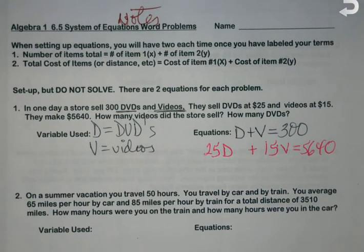To figure it out, price times quantity, 25 times D. Then we're going to do the same thing for the video. How much does each video cost? 15. And then how much total do all these DVDs and videos cost? A whole bunch.